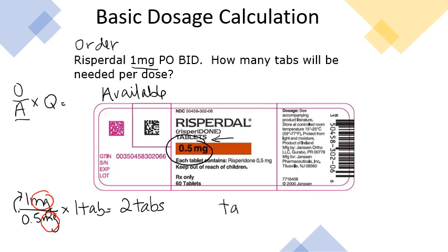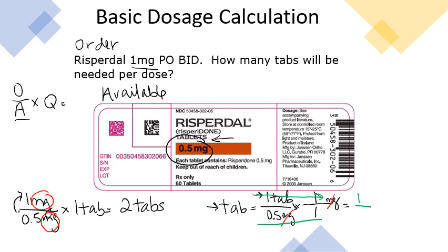You can also use dimensional analysis. We need to figure out how many tabs to give, so one tab goes in the numerator. One tab equals 0.5 milligrams; we're giving 1 milligram, and place a 1 to hold the value. Cancel the like units — milligrams over milligrams. Multiply across the top: 1. Multiply across the bottom: 0.5. Your answer is still 2 tablets.